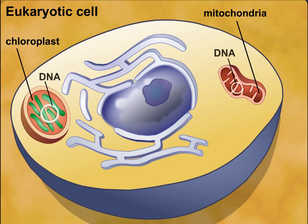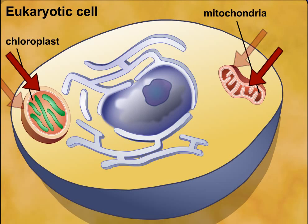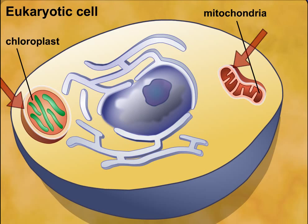2. Both mitochondria and chloroplasts are surrounded by two membranes. The inner membrane probably evolved from the plasma membrane of the engulfed prokaryote, while the outer membrane is probably derived from the cell membrane of the host. 3. Mitochondria are about the same size as bacteria.